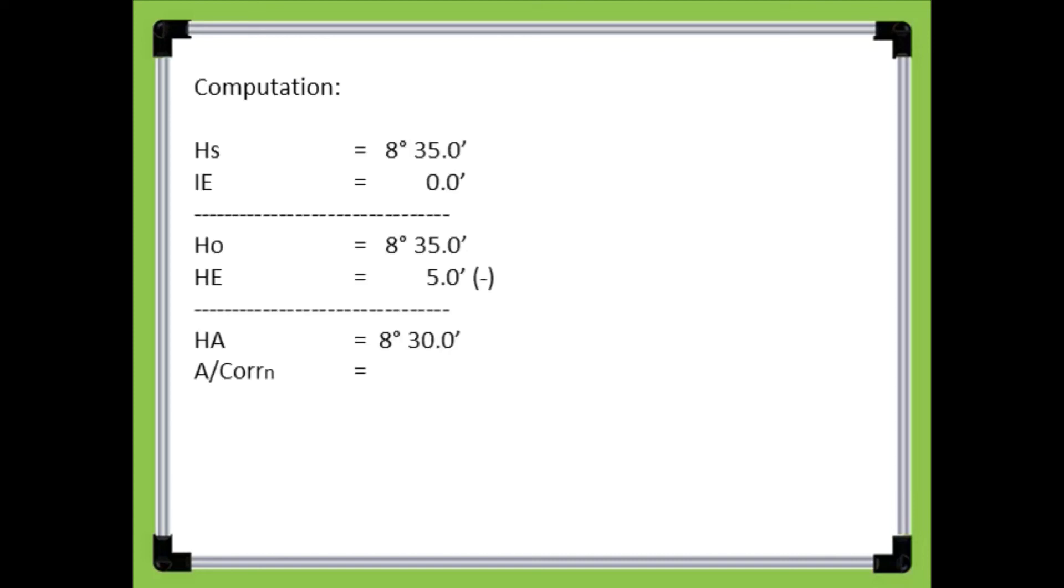The apparent altitude correction is 6.2 minutes. Subtract it to the apparent altitude. The result is the true altitude of the star Sirius, which is 8 degrees and 23.8 minutes.